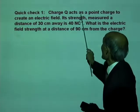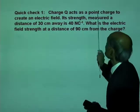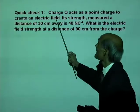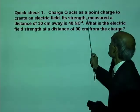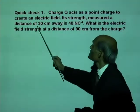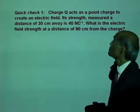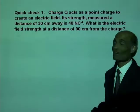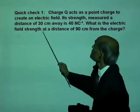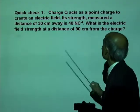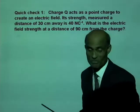Charge Q acts as a point charge to create an electric field. Its strength measured at a distance of 30 cm is 40 N per C. What is the electric field strength at a distance of 90 cm from the charge?